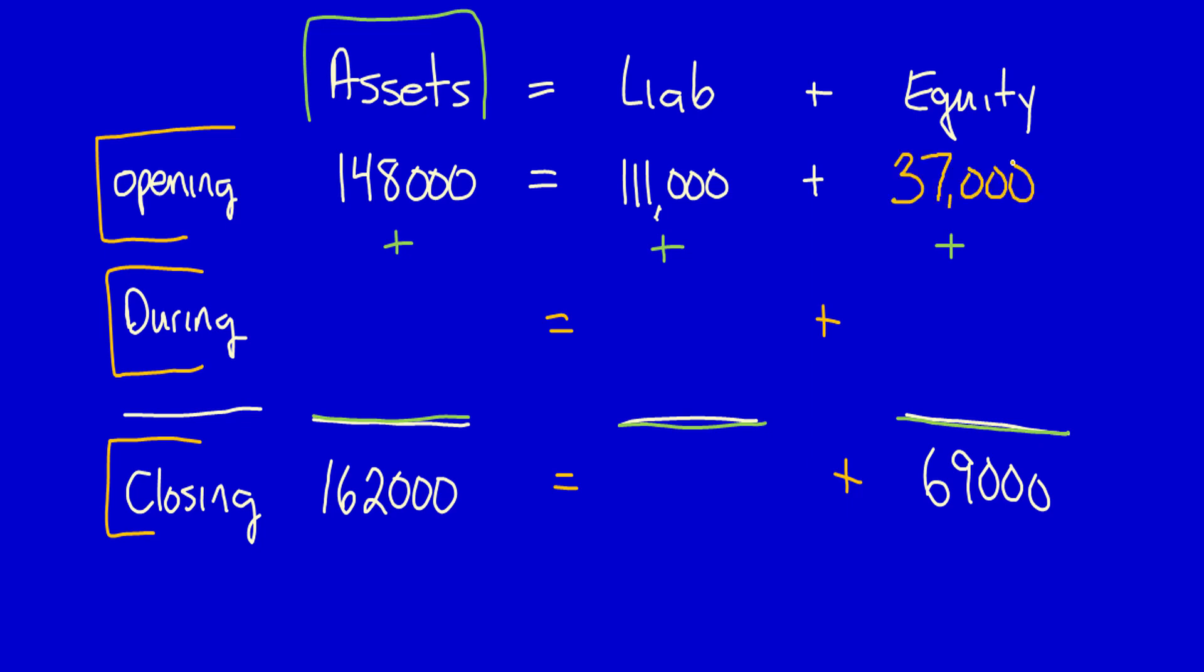Closing. $162,000 is equal to liabilities plus $69,000. $162,000 minus $69,000 is equal to $93,000. I can now use the columns to calculate the during.